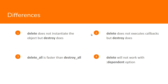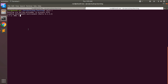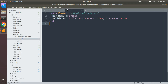For deleting a single record, it just takes an ID argument or the ID of the model object. For deleting multiple records or multiple objects, it takes an array of IDs or array of primary keys of the records to be deleted. Let's look at this practically to understand how delete and destroy work.